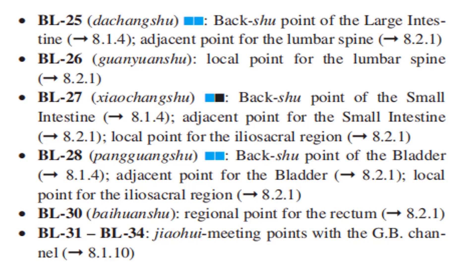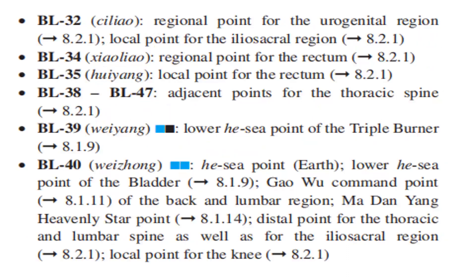Bladder 31 to Bladder 34 — Bladder 34 is the regional point for the GV channel. Bladder 32 is the regional point for the urogenital region and the local point for the ileo-sacral region. Bladder 34 is the regional point for the rectum. Bladder 35 is the local point for the rectum.